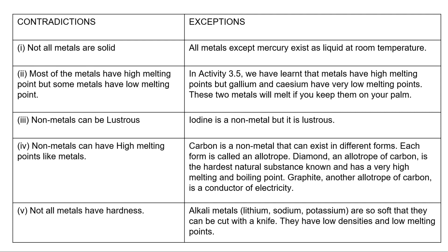Gallium and caesium will actually melt if you keep them on your palm — that is how sensitive these metals are. The third contradiction is about lustre: lustre is a property of metals, not non-metals. However, iodine is a non-metal but it is lustrous. The fourth contradiction is that non-metals can have high melting points like metals. The exception is that carbon is a non-metal that can exist in different forms called allotropes. Diamond, an allotrope of carbon, is the hardest natural substance known and has a very high melting and boiling point.